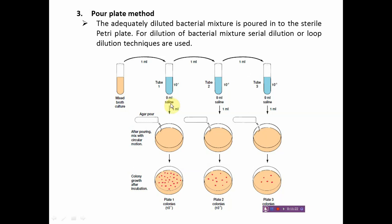As the dilution increases, there is a better chance of obtaining well-isolated colonies. The plate that gives a colony count between 25 and 300 is selected, and from that dilution the isolated bacteria can be separated. The pour plate technique is also used for the quantitative measurement of bacterial cells.